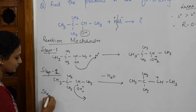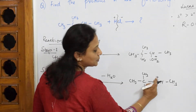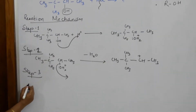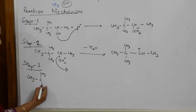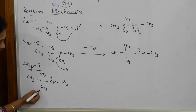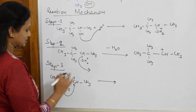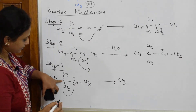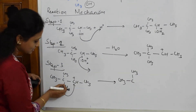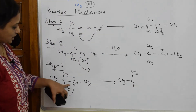In Step 3 — most important — to satisfy this positive charge, there is a shift of a methyl group to this carbocation carbon. So we write: CH₃–C(CH₃)₂–CH⁺–CH₃, and this methyl group shifts from the adjacent carbon to the carbocation. Because that carbon has lost a CH₃, it now attains a positive charge instead.